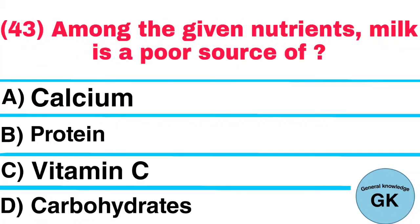Question number 43. Among the given nutrients, milk is a poor source of: A. Calcium, B. Protein, C. Vitamin C, D. Carbohydrates. Answer: Vitamin C.